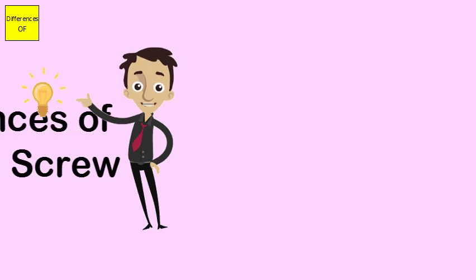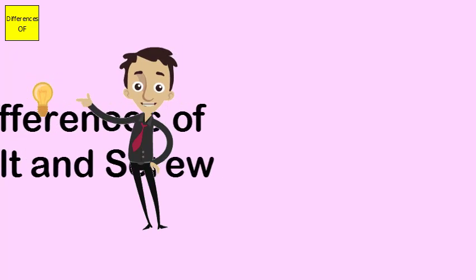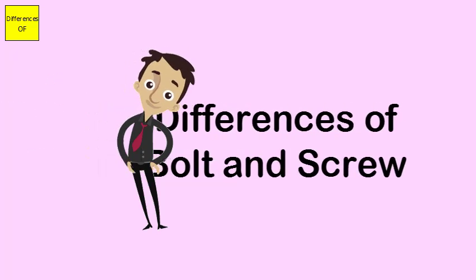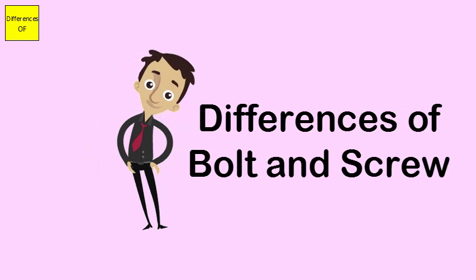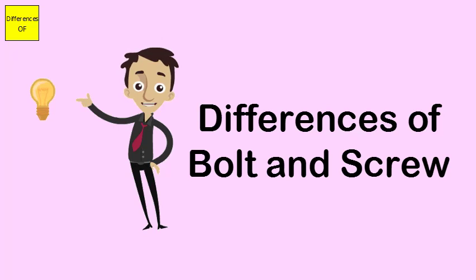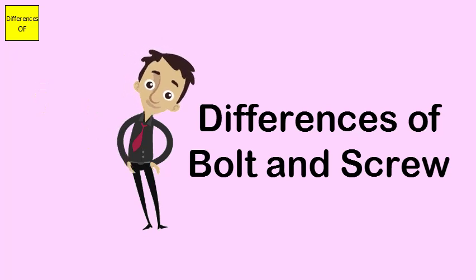Difference between bolt and screw. A screw has a threaded shank and a slotted head. A bolt has a threaded head or pin at one end which is inserted into a hole and secured by a nut.